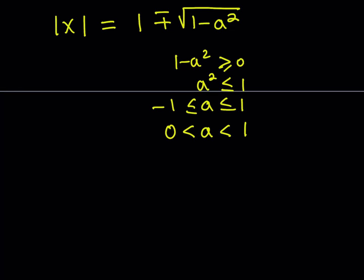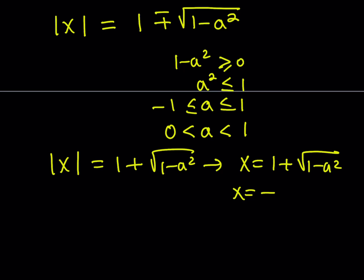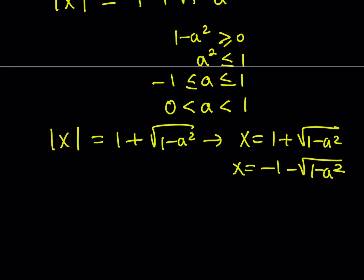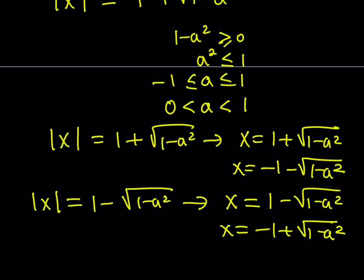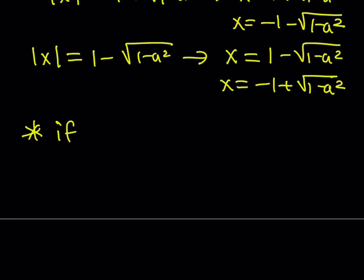For 0 < a < 1 we get four solutions. From |x| = 1 + √(1 - a²), we get x = 1 + √(1 - a²) or x = -(1 + √(1 - a²)). From |x| = 1 - √(1 - a²), we get x = 1 - √(1 - a²) or x = -(1 - √(1 - a²)). The case a = 1 is handled separately — substituting gives x = 1 or x = -1, which also follows from the four solutions above.